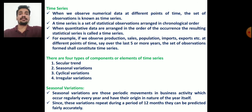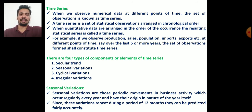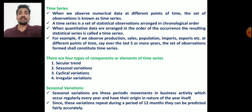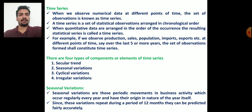Seasonal variations are those periodic movements in business activity which occur regularly every year, having their origin in the nature of the year itself. These are variations which occur every year at a particular period of time. Since seasonal variations repeat during a period of 12 months, they can be predicted fairly and accurately.